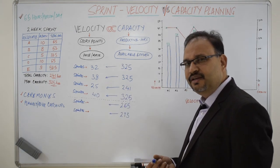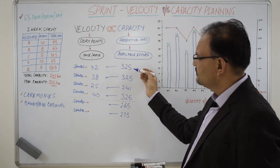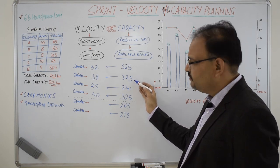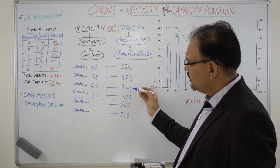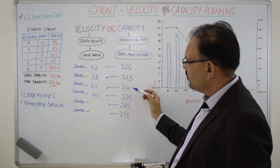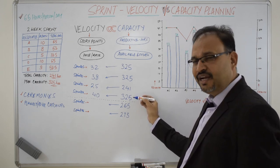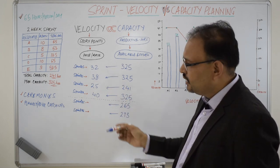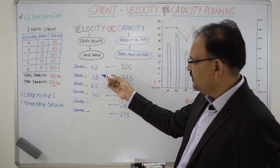Now let's see how the relationship between velocity and the capacity evolves sprint over sprint. In the very first sprint, team is available in full capacity that is 325 and they are knocking off the velocity of 32 story points. In the second sprint again team is in full capacity and they are knocking off the velocity of 38 story points which is a slight improvement there. In the third sprint, team is only available for 241 hours as some of the members have gone on leave, so they are knocking off the velocity of 25 story points. In the fourth sprint again team is in full capacity. Everybody is present for 10 days. They are knocking off a velocity of 40 story points which is a slight improvement from 38. Now we can see a trend emerging here. When the team is in full capacity they are knocking off a velocity of 32 and then 38 and 40.